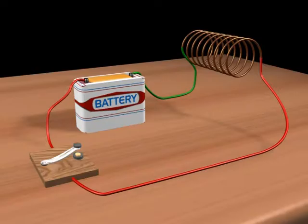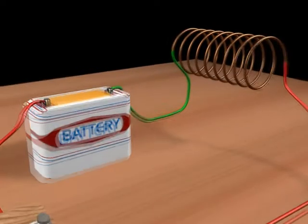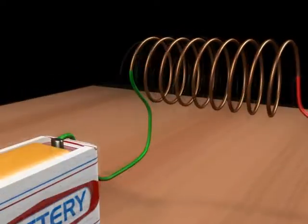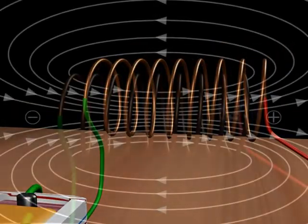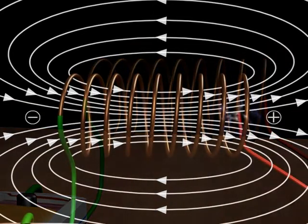Now, circular cross section dhe, long straight solenoid lagey, jis dhe koi vhi turns, ik dujje to insulated hon. Solenoid vichon current pass current dhe, is dhe har eek turn nho, ik current carrying circular loop dhe tarah, samjhya ja saktah hai, jho magnetic field vhi payda kar dhi hai.